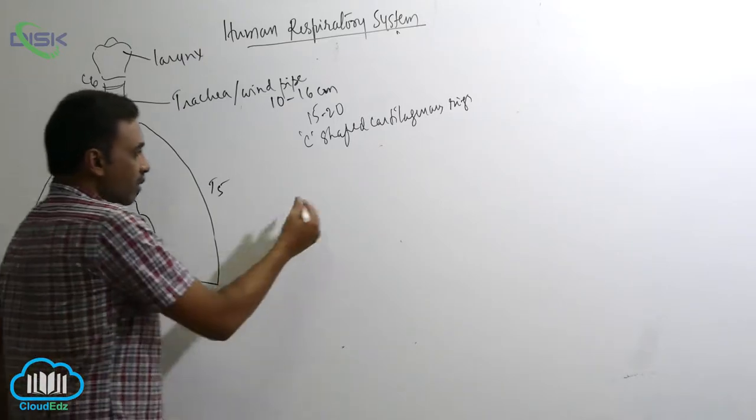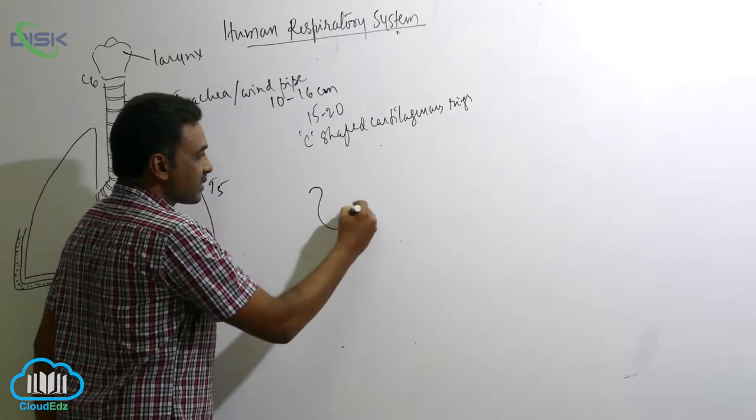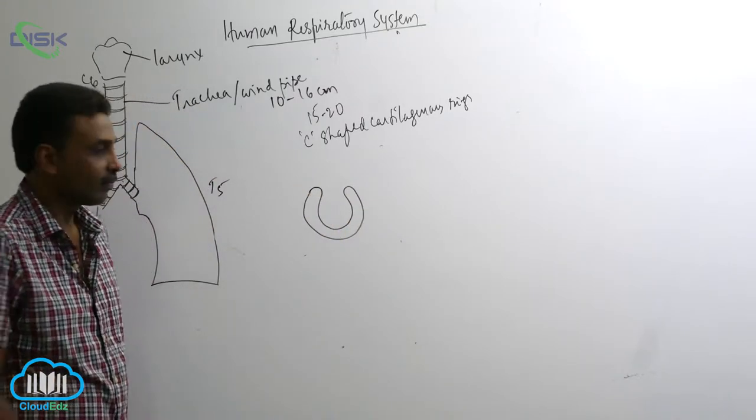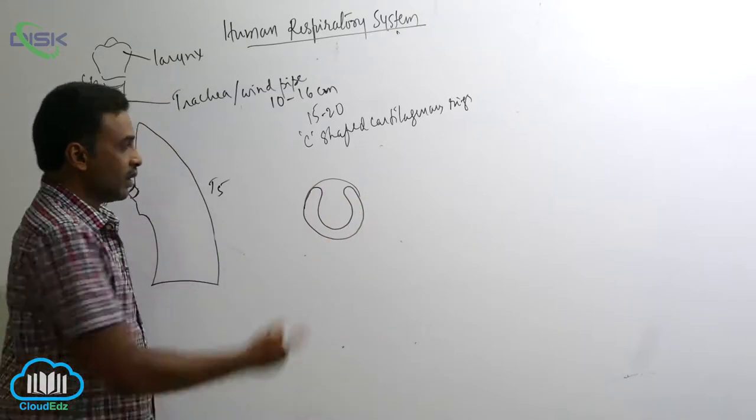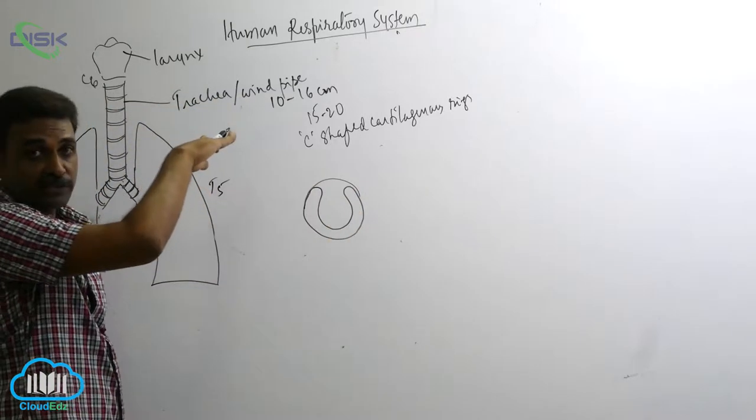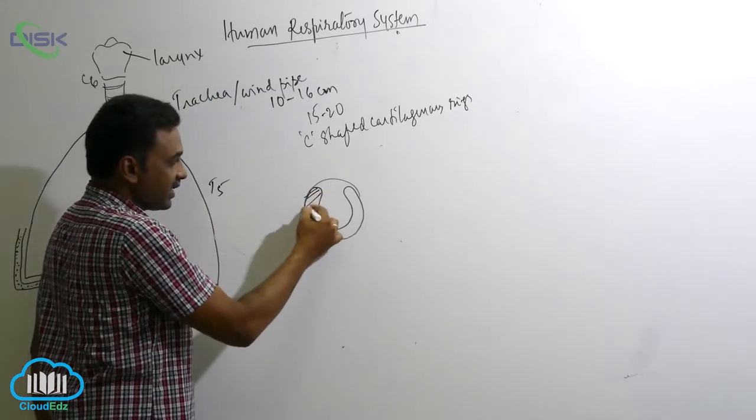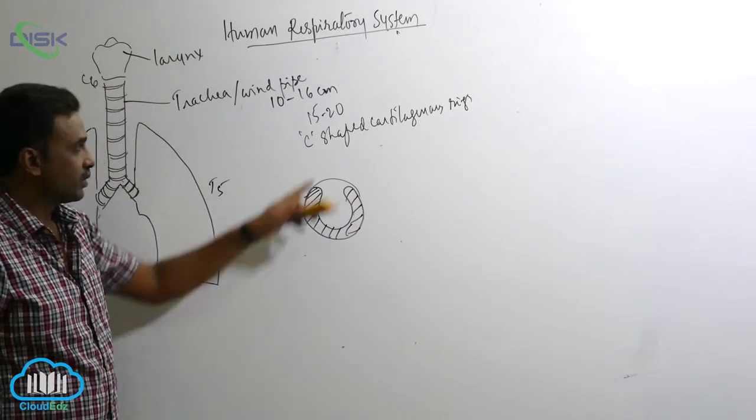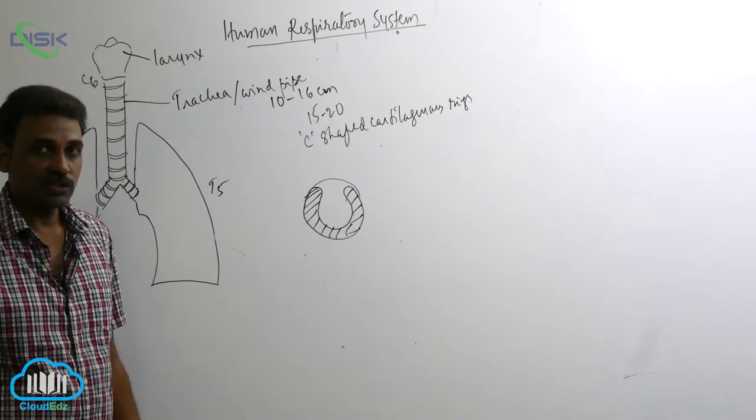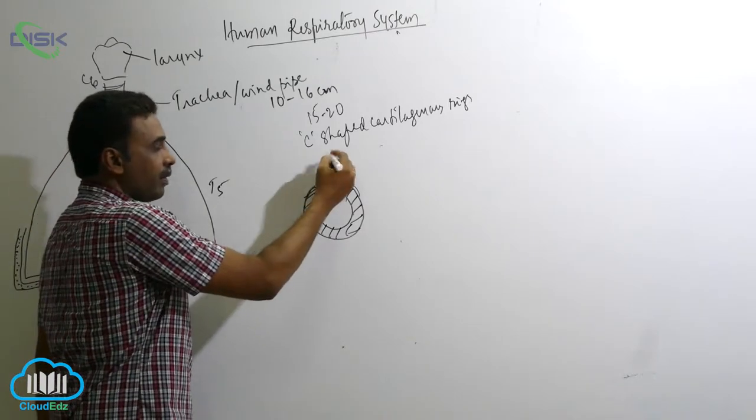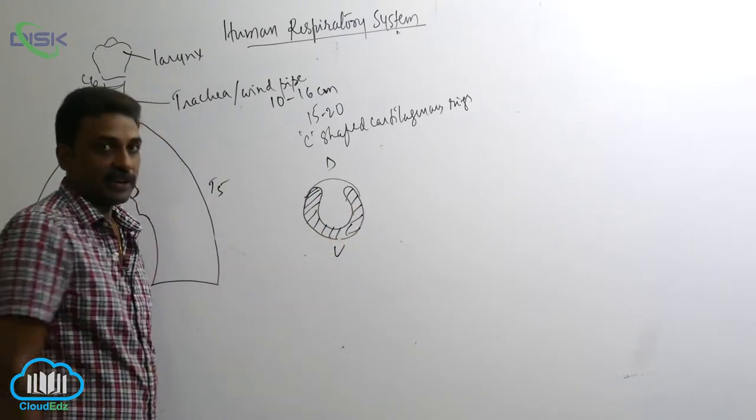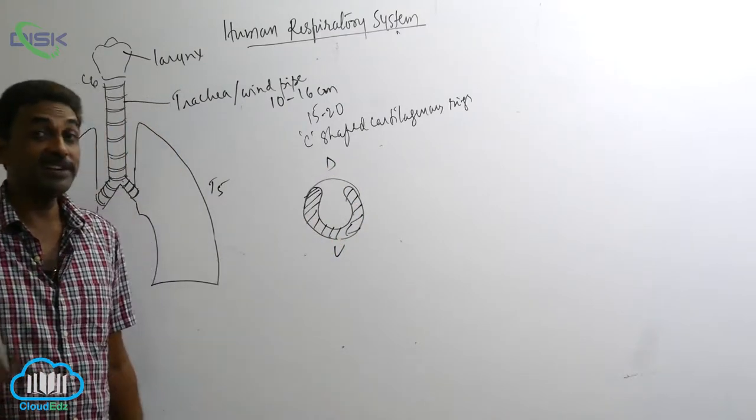So C-shaped cartilaginous rings. If I have taken the cross section of trachea, I can see rings like this. So they are made up of hyaline cartilage. They are present on the lateral side as well as ventral side but on the dorsal side they are incomplete.